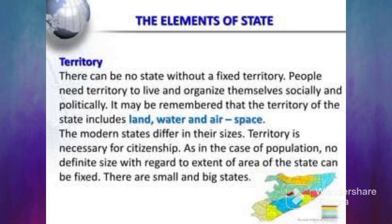Second element of a state is territory — یعنی علاقہ، ایک مخصوص حدود۔ کوئی بھی ریاست ایک خاص علاقے کے بغیر وجود نہیں رکھتی۔ People need territory to live and organize themselves — socially اور politically۔ Territory کے اندر شامل ہے: land, water, air, and space — یہ چاروں چیزیں territory میں آتی ہیں۔